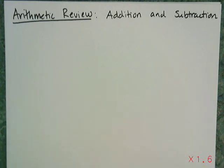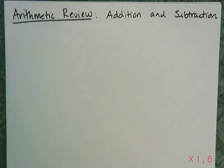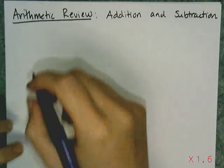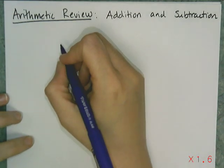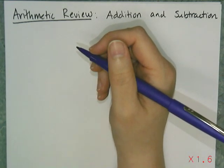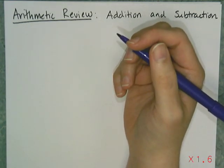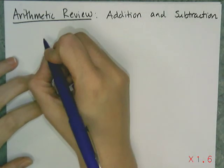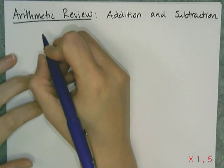Hello, this is Ms. Hill again, and this is the second of the arithmetic review lessons, and it's on addition and subtraction. So a quick reminder: when you add and subtract fractions, you need to have common denominators. We're going to be working primarily with positive and negative fractions. So let's start with addition.